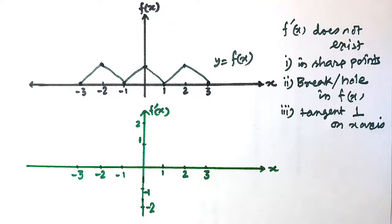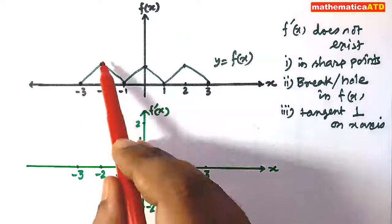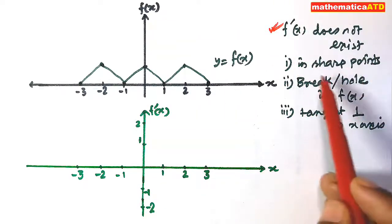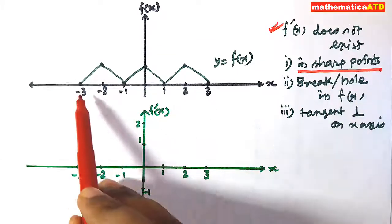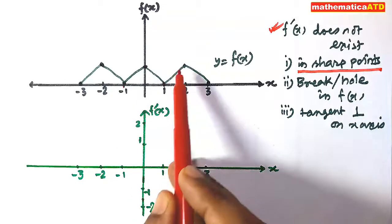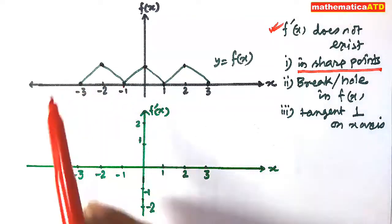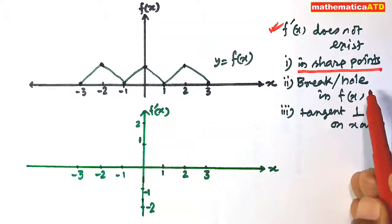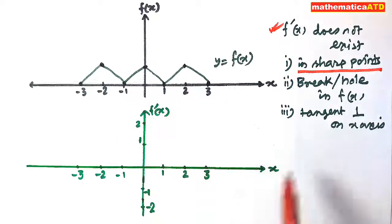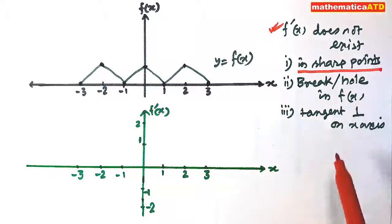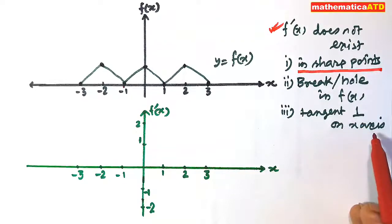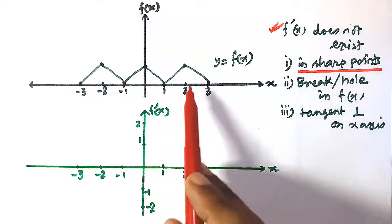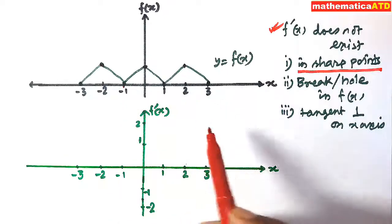Now we shall draw another gradient function for a different given function y = f(x). First, f'(x) does not exist at sharp points — at these points we cannot draw tangents. Also, f'(x) does not exist at breaks or holes in f(x), or when the tangent would be perpendicular to the x-axis.